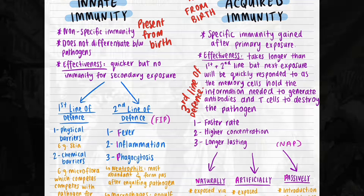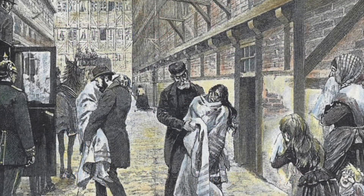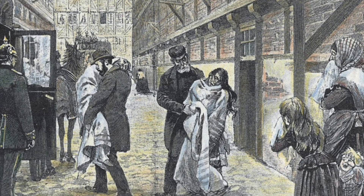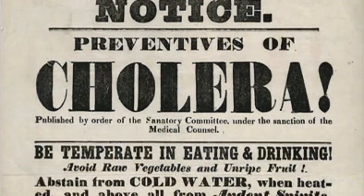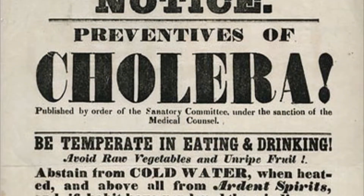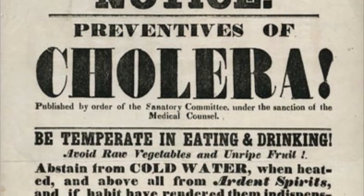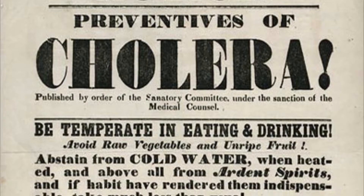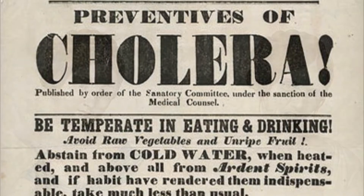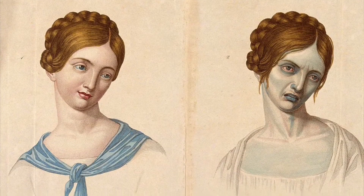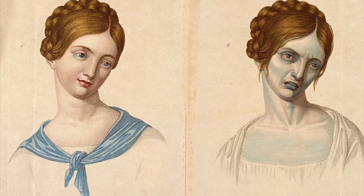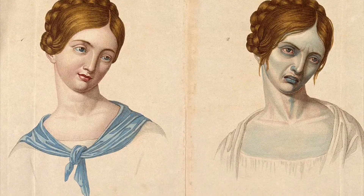To explain both responses, let's look at an example of an infectious disease which made history with four pandemics over the last 200 years. Cholera, also known as the blue death, was called that because patients became blue after severe dehydration. Cholera is a bacterial infectious disease caused by the bacteria Vibrio cholerae.